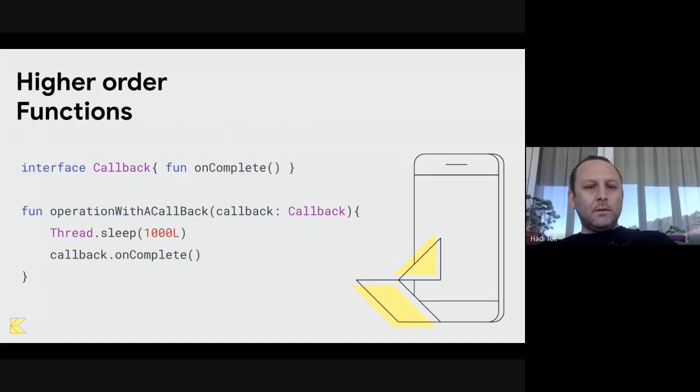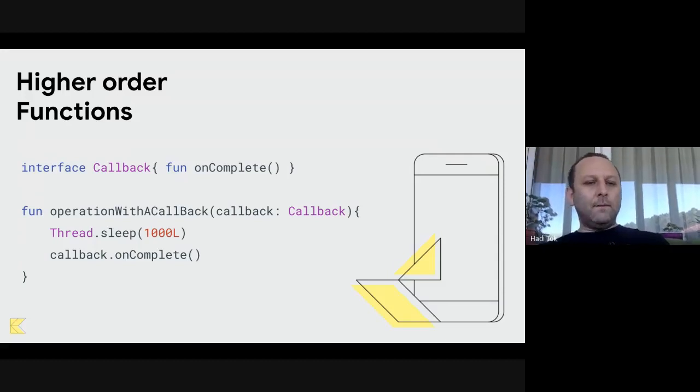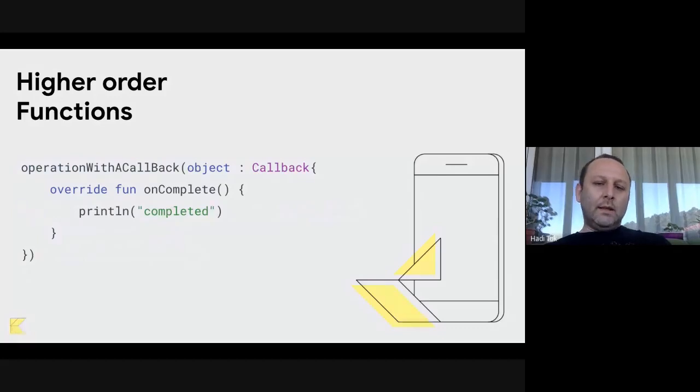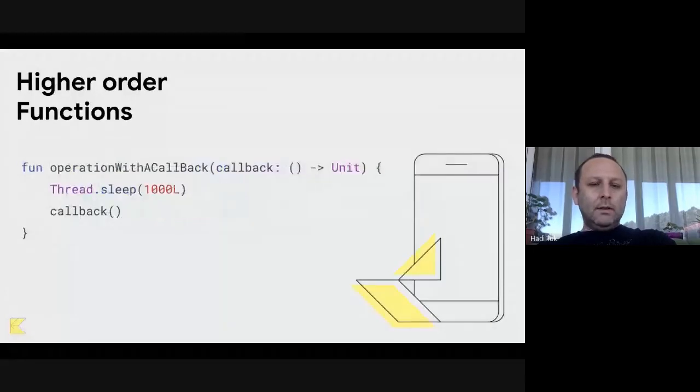Secondly, higher-order functions. In Java, or if we don't have higher-order functions, when we need a callback after a long-running operation, we would have to have an interface and an abstract method to be able to let the caller know the results of the long-running operation. In this example we have a callback and it has an on-complete method. When we want to call it, we need to create an instance of this interface and pass it to the function that we are calling.